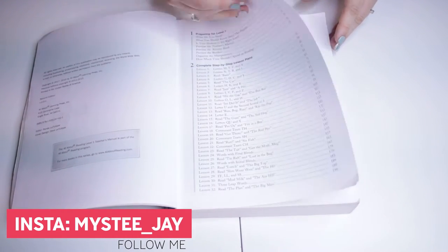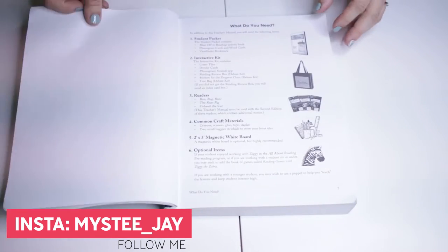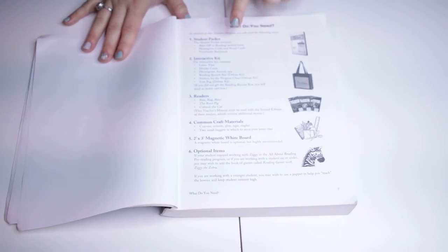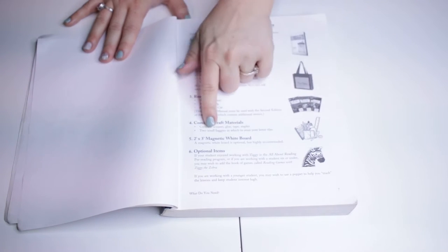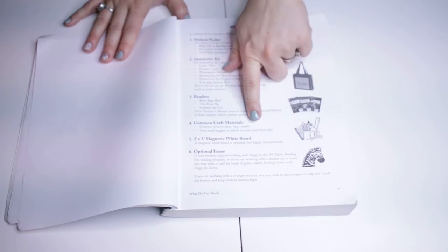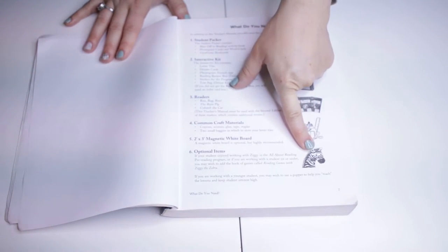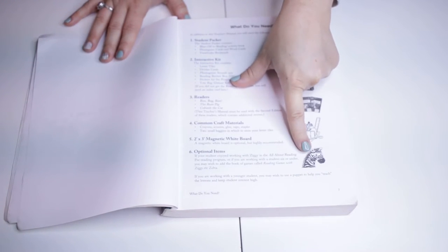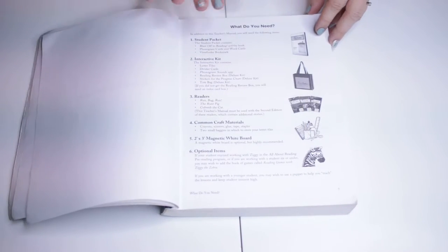Then it goes over preparing for Level One, what you will need. So it talks about your student packets, interactive kit, the books, some of the regular supplies you'll need like scissors and glue, things like that.